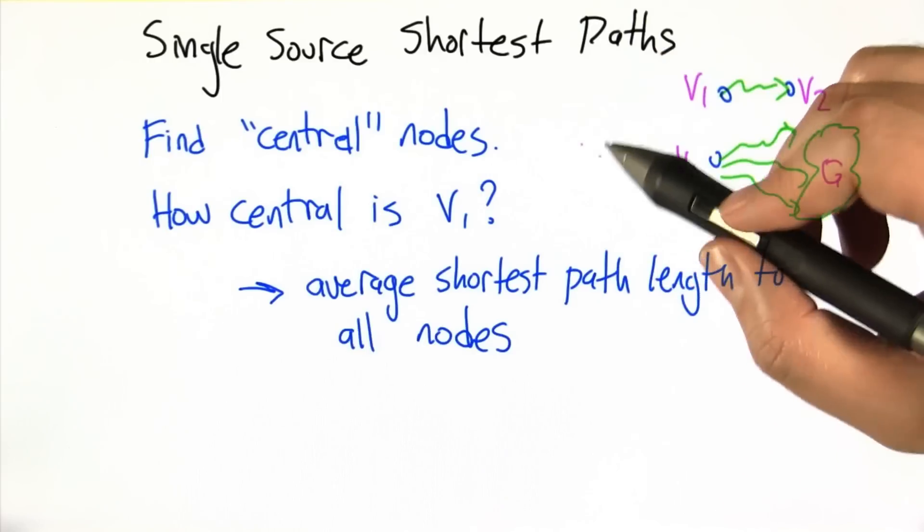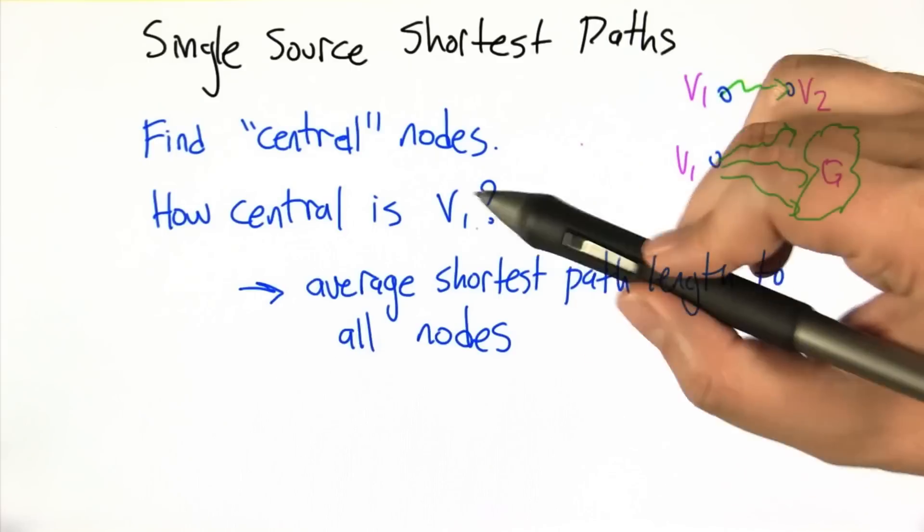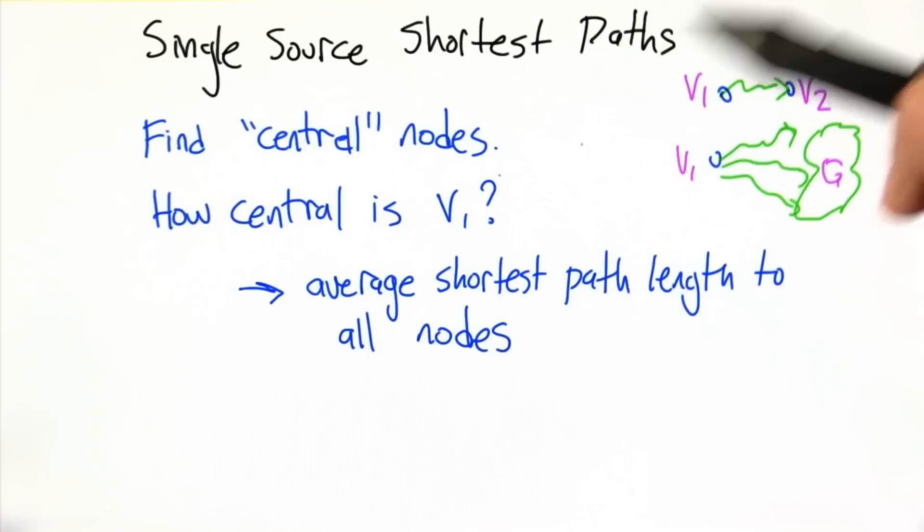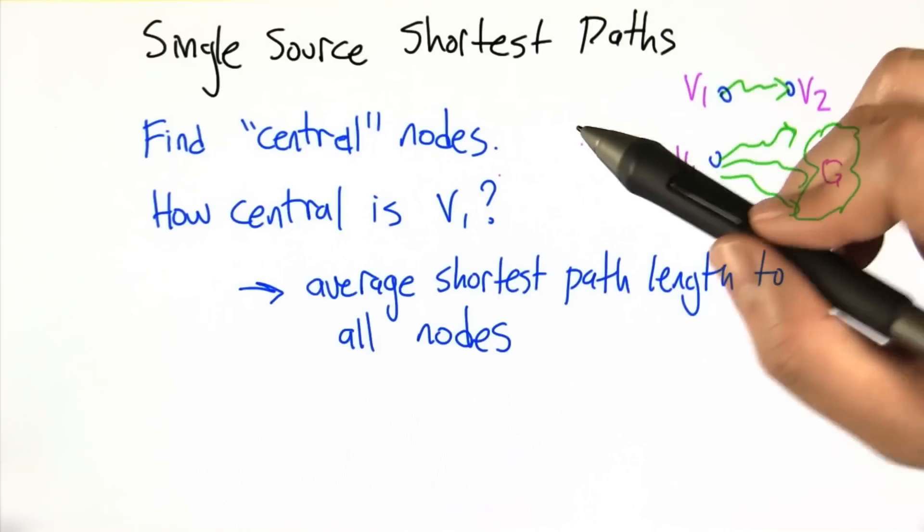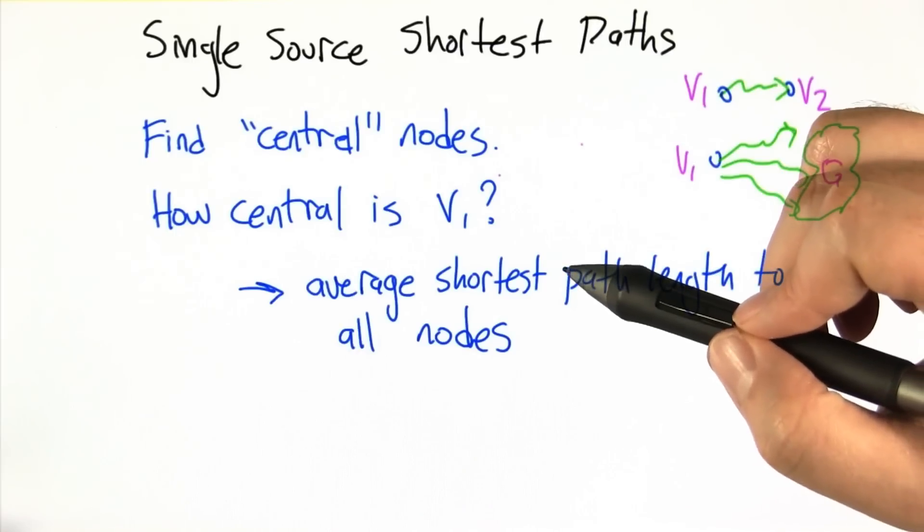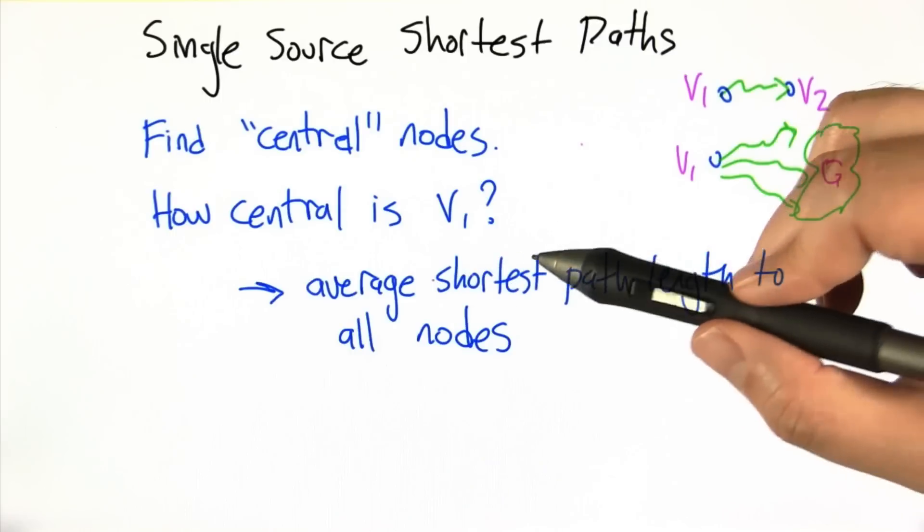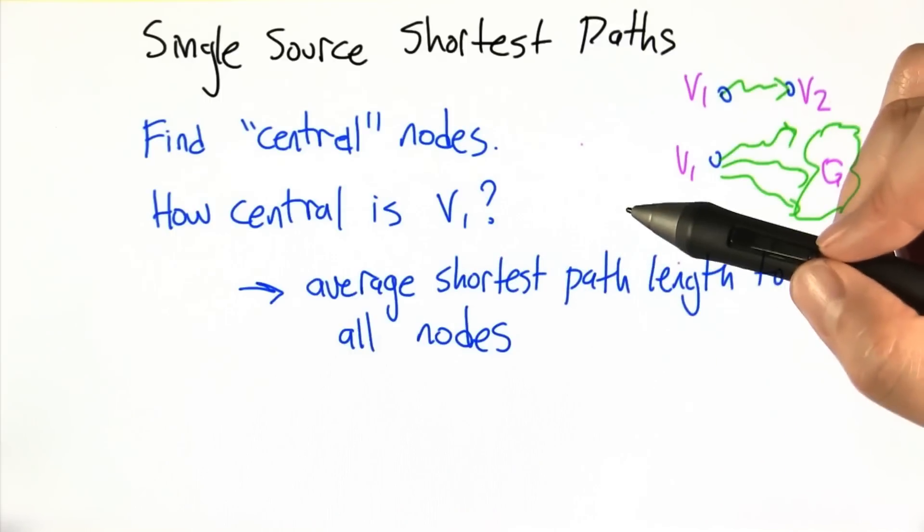And so we're going to look now at the question of given a node V1, how central is it? Now it turns out there's lots of different ways that you can define what central means. We're going to right now focus on a particular one, which is the average shortest path length to all the other nodes.